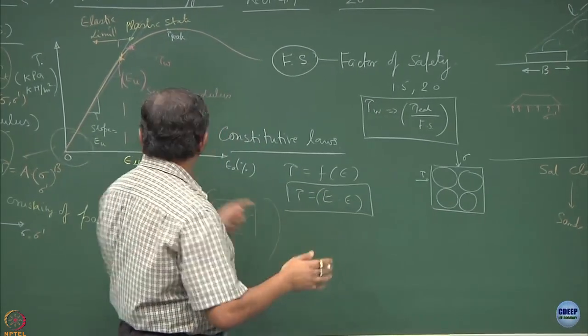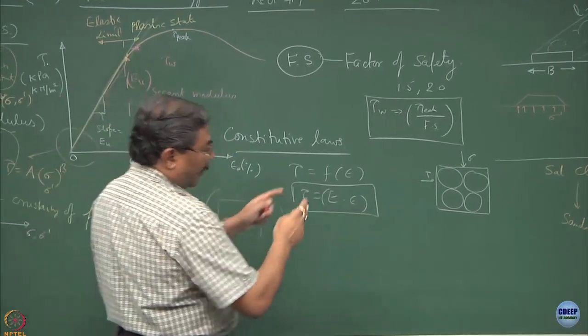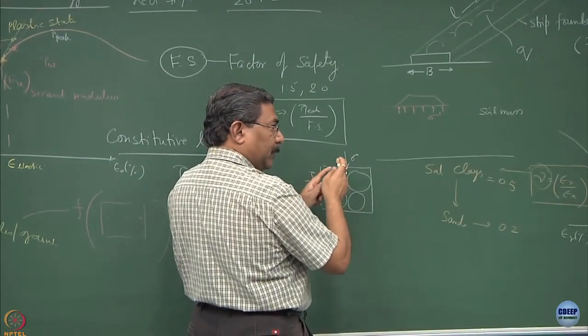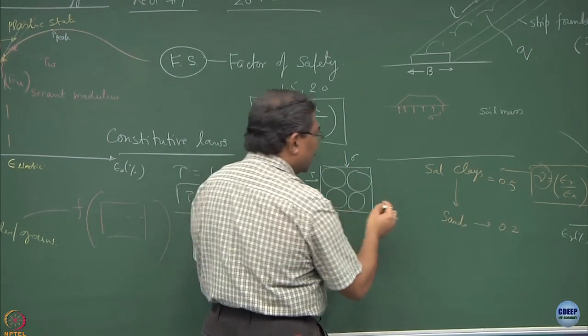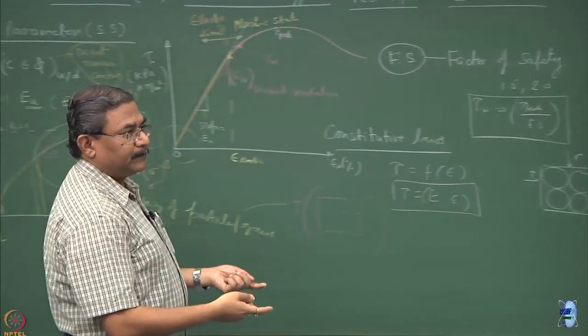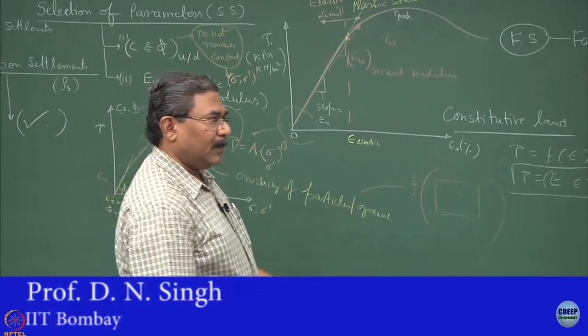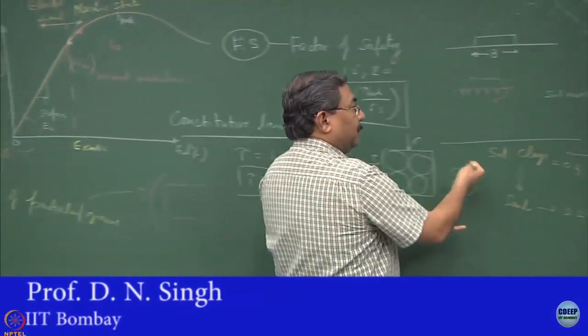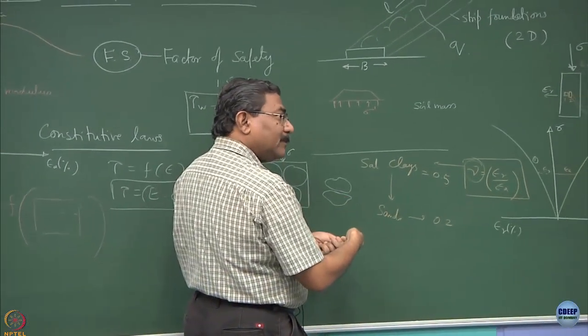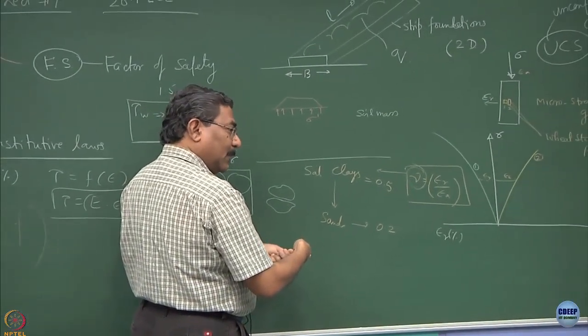It will tolerate up to a certain point, elastic range. Now there might be a breakage, crushing which might occur. The moment crushing occurs, what happens? The system becomes slightly less rounded, sphericity is changing. The more and more the system becomes flaky, irregular, interlocking effect comes. That you have to take into account.